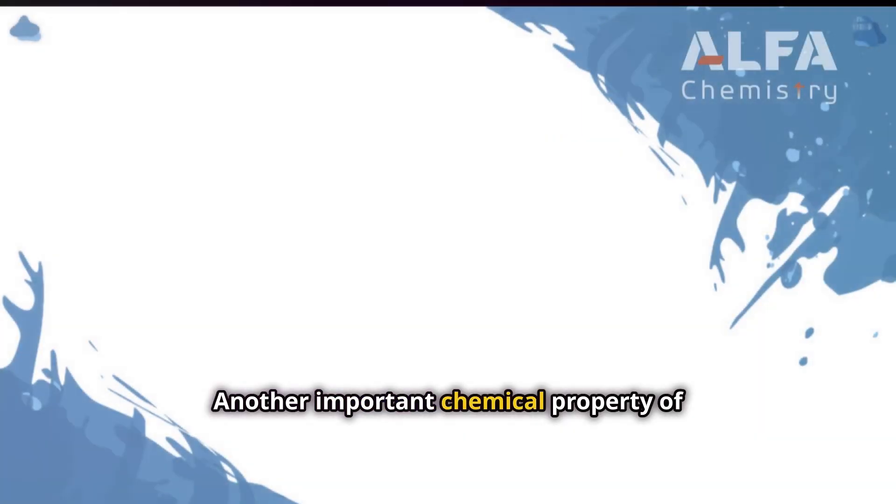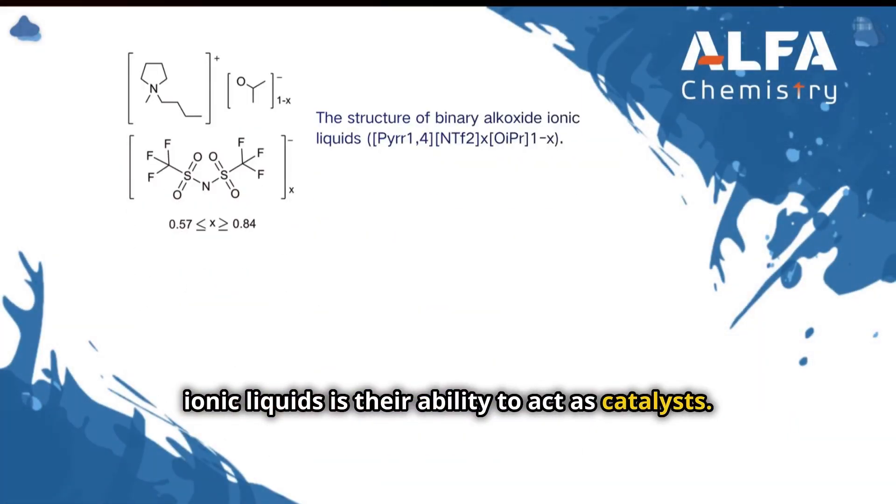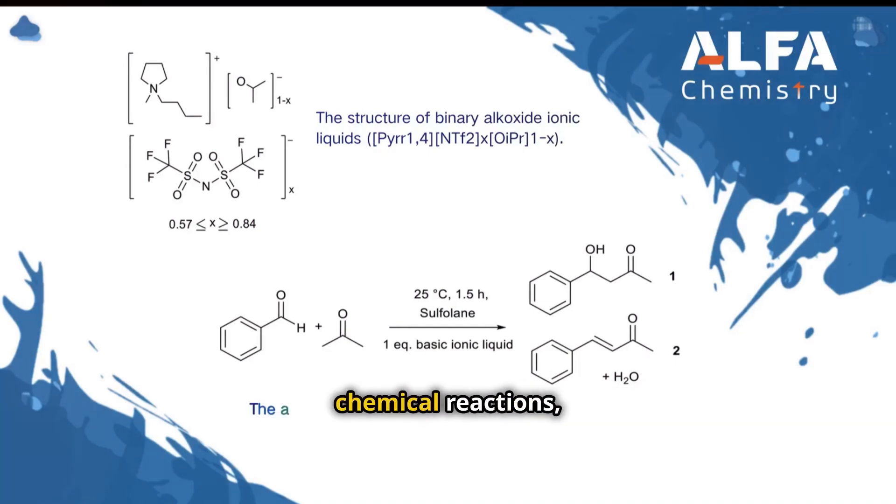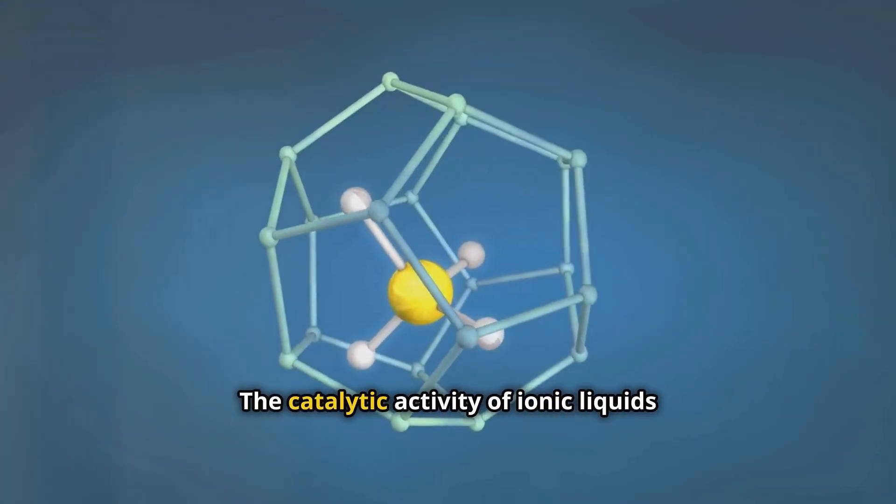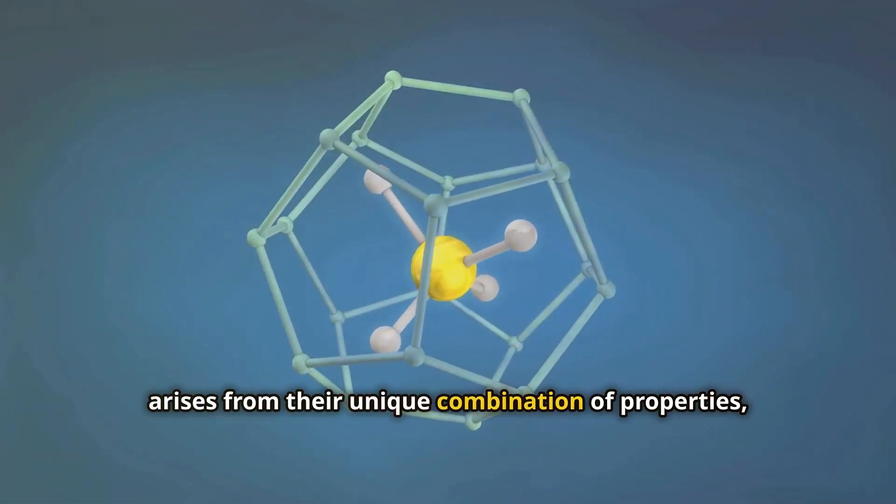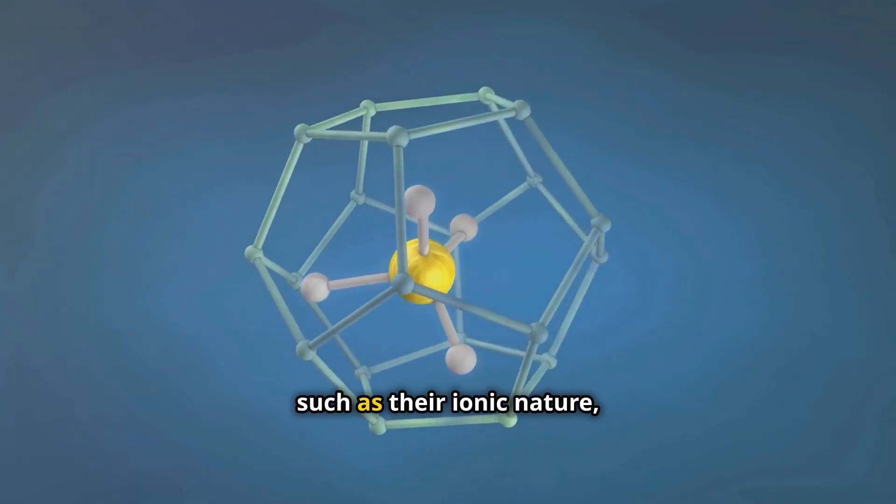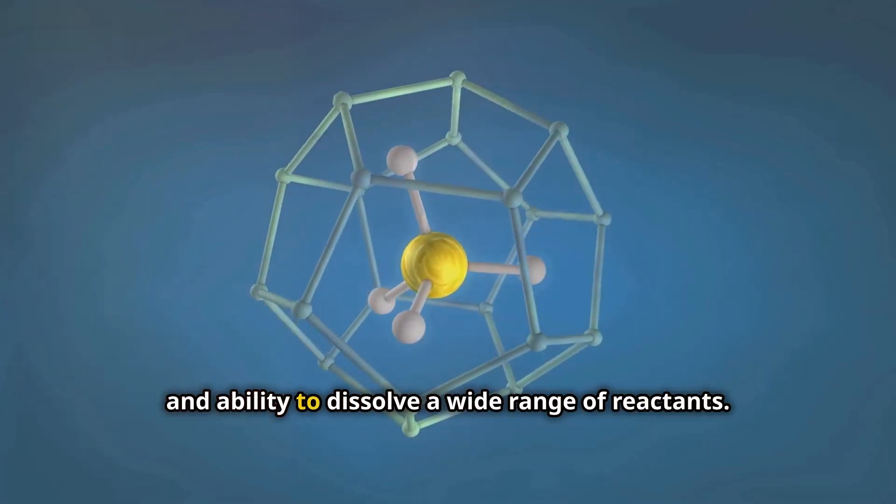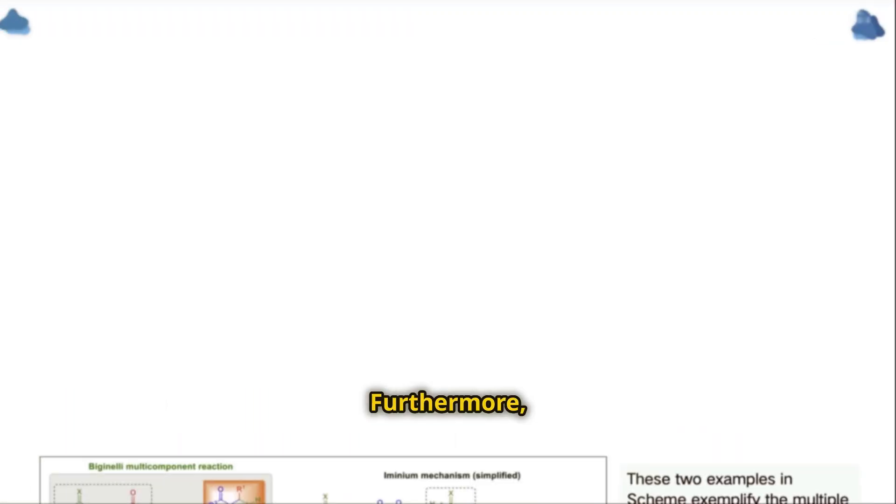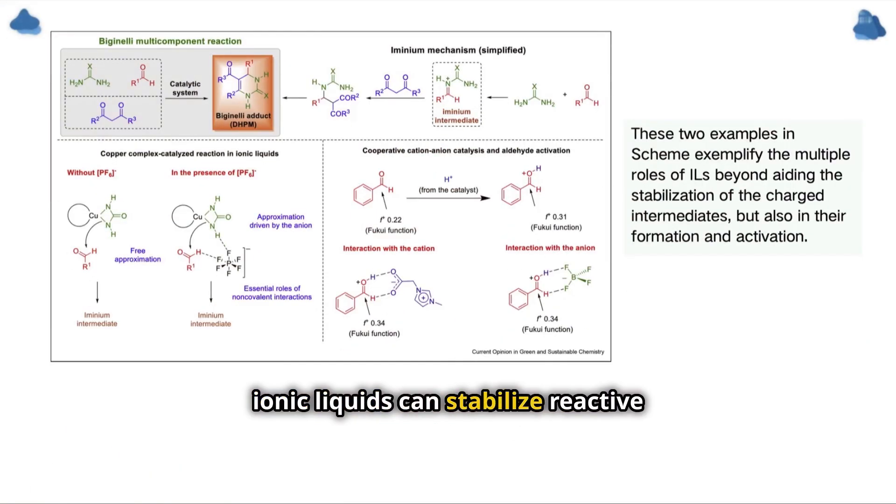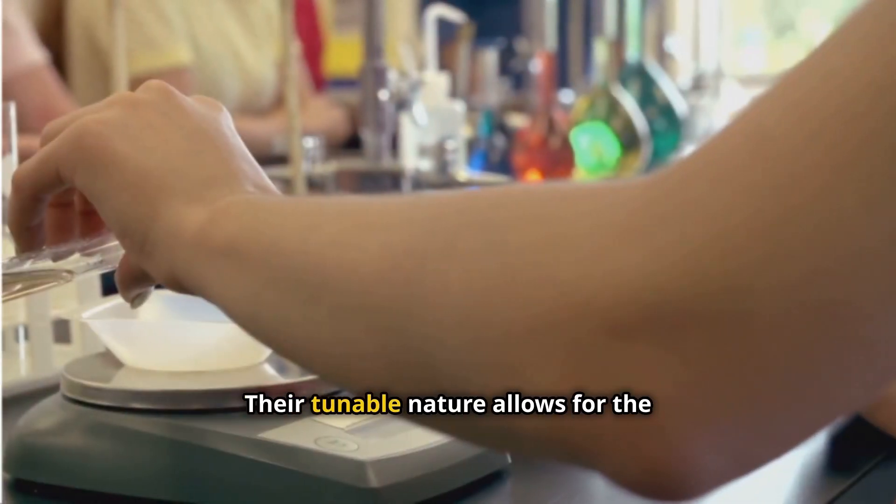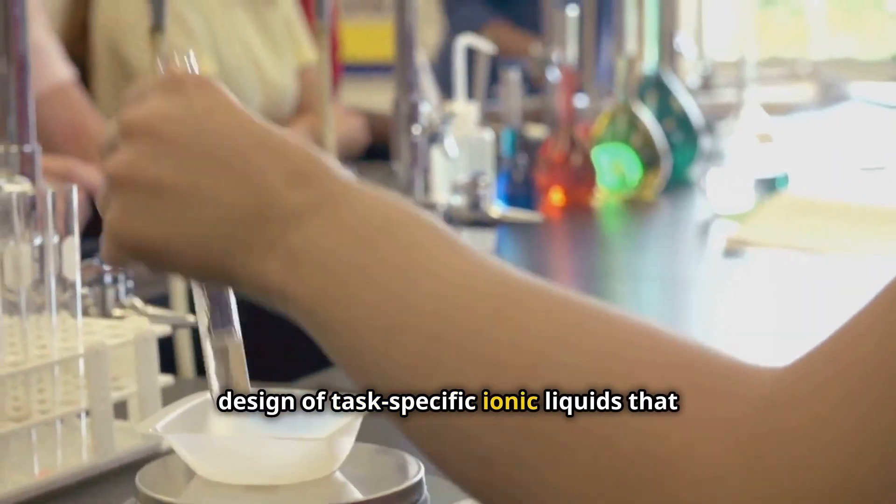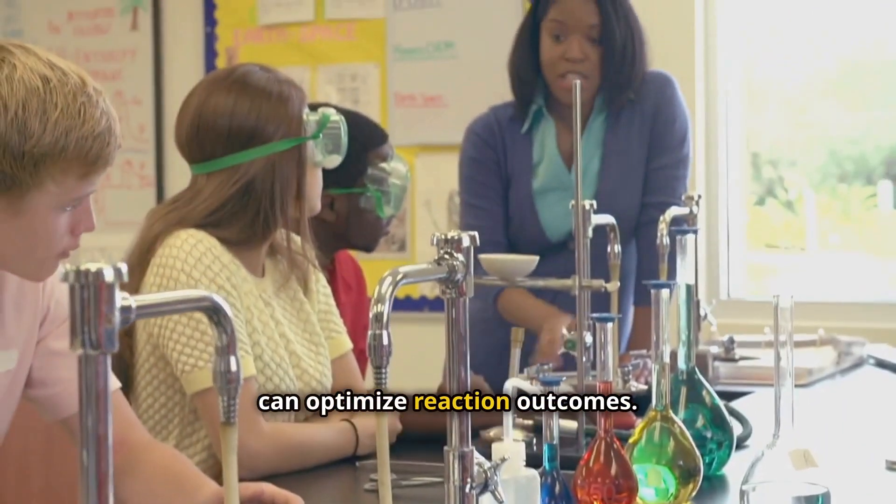Another important chemical property of ionic liquids is their ability to act as catalysts. They can catalyze a wide range of chemical reactions, including acid-base reactions, oxidation-reduction reactions, and organic reactions. The catalytic activity of ionic liquids arises from their unique combination of properties, such as their ionic nature, high polarity, and ability to dissolve a wide range of reactants. Furthermore, ionic liquids can stabilize reactive intermediates and transition states, enhancing reaction rates and selectivities. Their tunable nature allows for the design of task-specific ionic liquids that can optimize reaction outcomes.